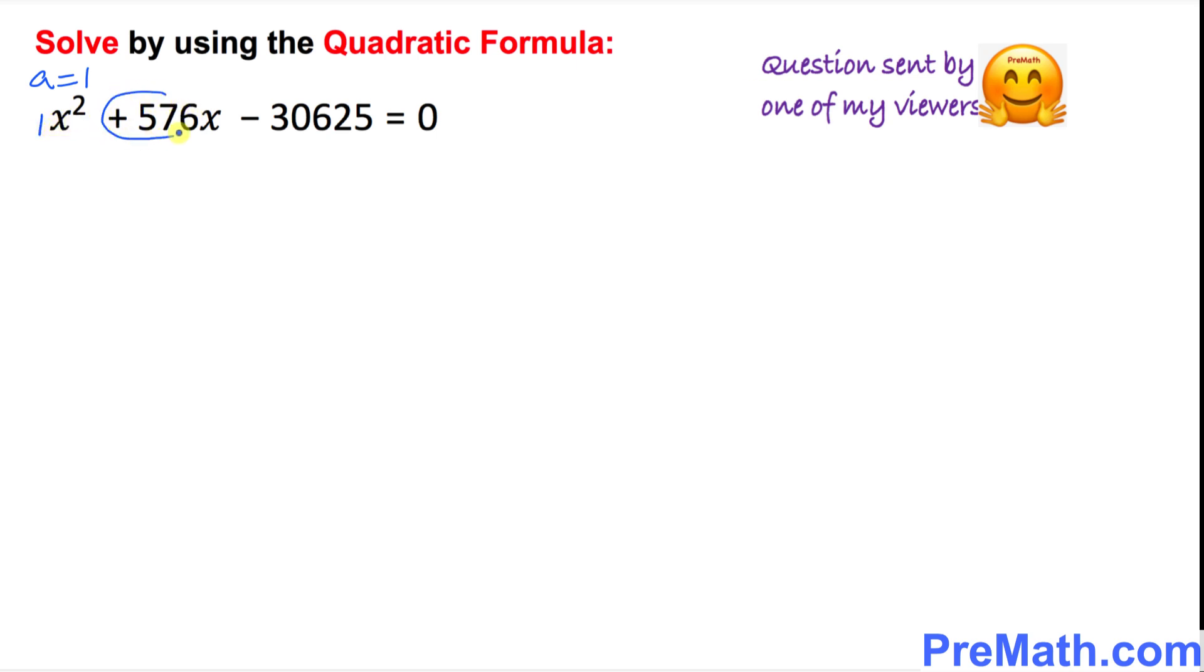Here, our b equals to 576, and c is a big number. c is negative 30625.